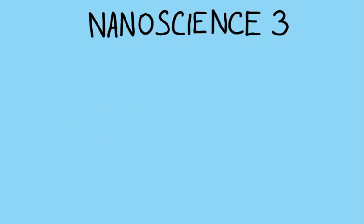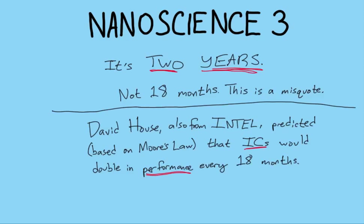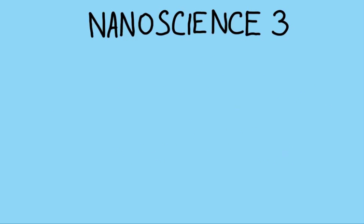You might hear sometimes that Moore's Law is 18 months. Well, it's not — that's wrong. It's two years. It's a misquote. See, this other guy, David House, who really hates you and wants to make your life as complicated as possible, predicted that integrated circuits would double in performance every 18 months. But that's different. So remember, Moore's Law is two years.